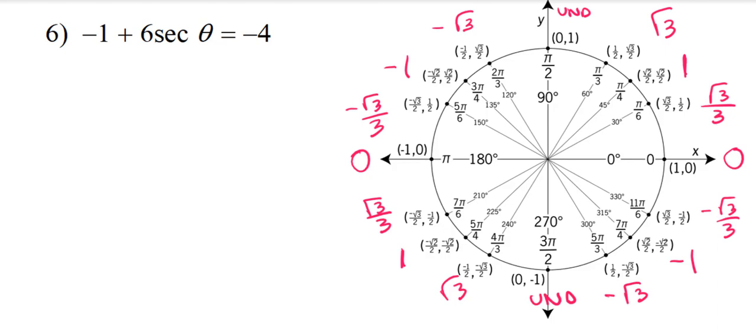So, I think you'll be okay with the initial solving of this. If you add one to both sides, we'll just get secant theta equals negative three. When you divide both sides by six, you'll end up with negative one-half.